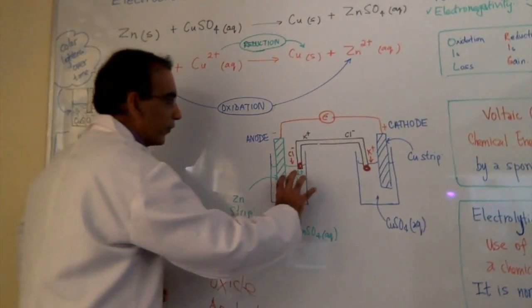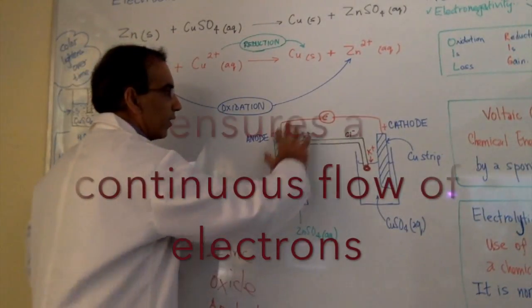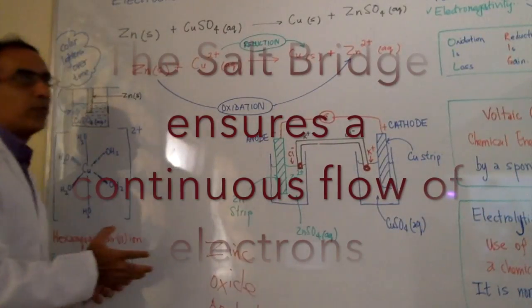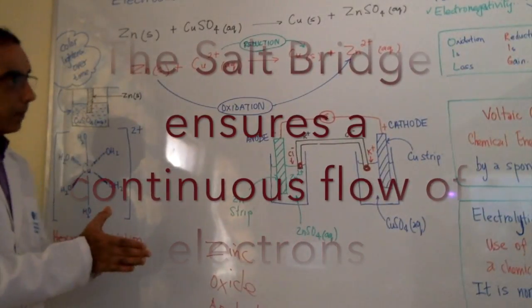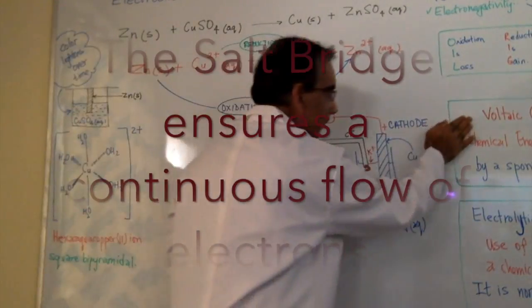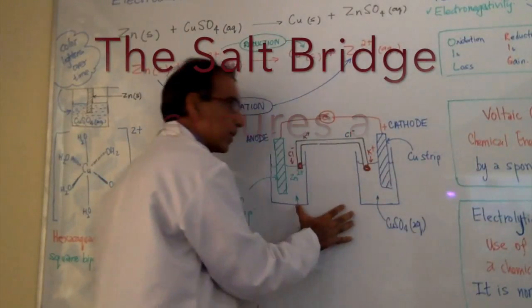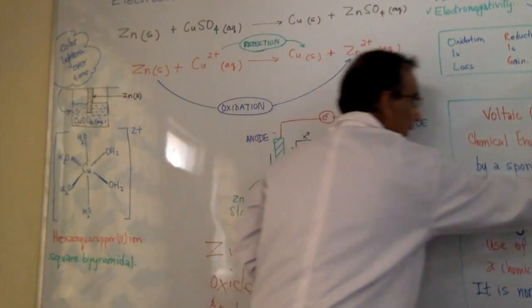So therefore only when you have the salt bridge, then you have a complete circuit and you have a situation where in a voltaic cell, chemical energy can become electrical energy.